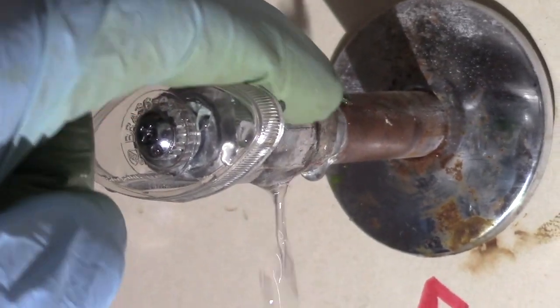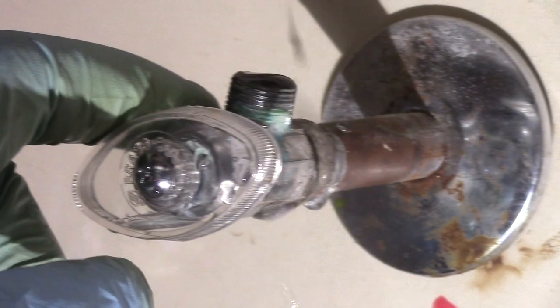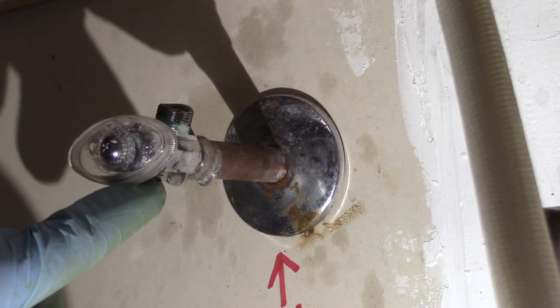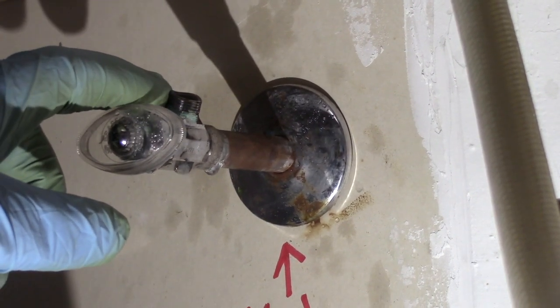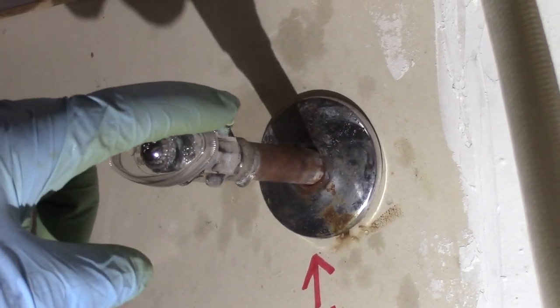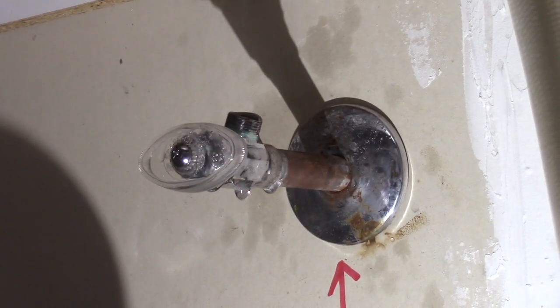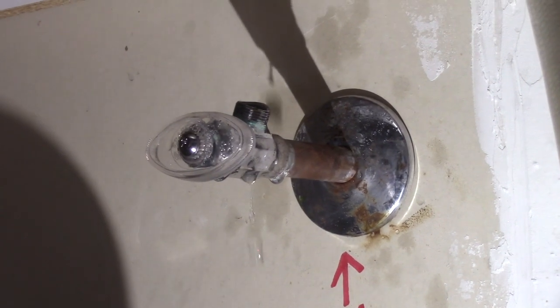Uh oh, we have a problem with this shut off valve. Notice all the calcium build up at the bottom of the thread. The biggest problem is this is in the off position and it's still dripping and leaking water. This means the rubber gasket inside is gone and we have to replace this.